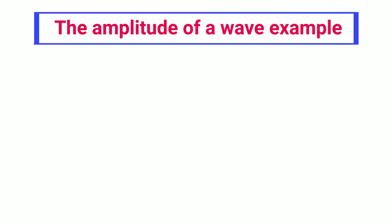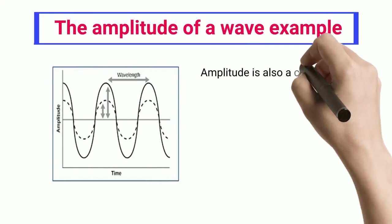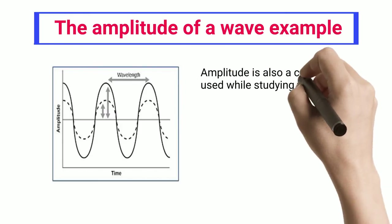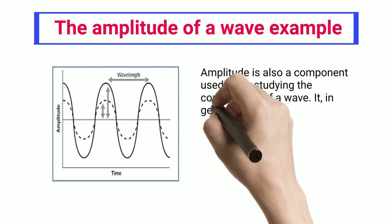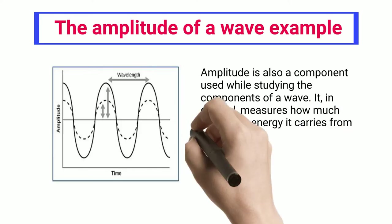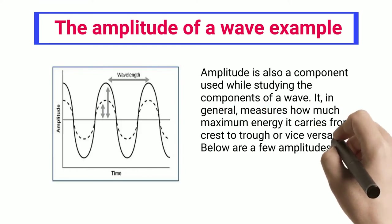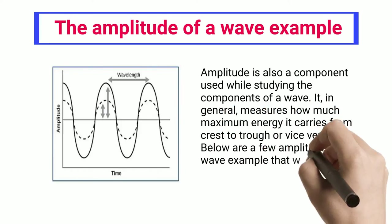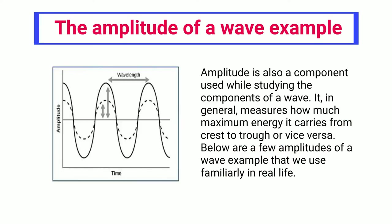The Amplitude of a Wave — Example. Amplitude is also a component used while studying the components of a wave. It, in general, measures how much maximum energy it carries from crest to trough, or vice versa. Below are a few examples of the amplitude of a wave that we use familiarly in real life.